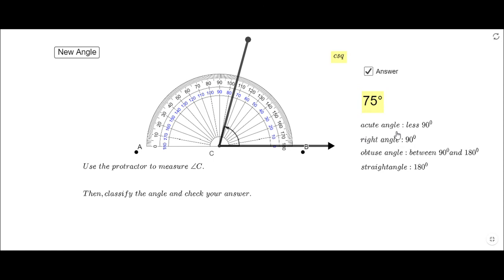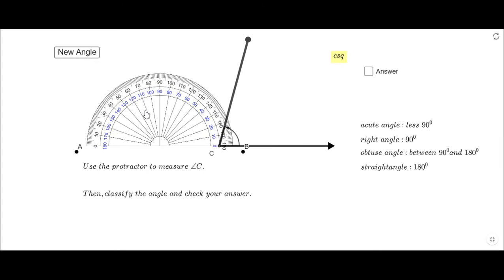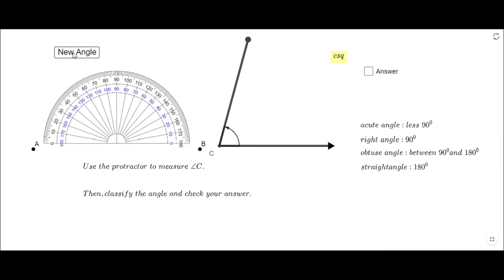This angle is an acute angle because it's less than 90 degrees. Let me uncheck this and move this. You may want to practice with this protractor. I'm going to try a new angle and do the same thing.